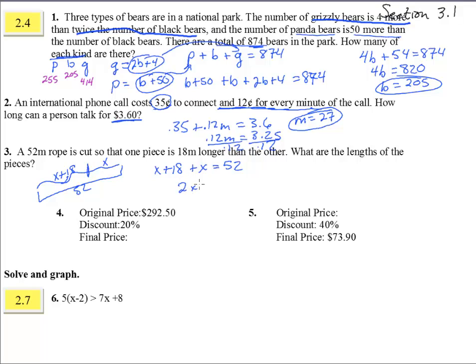Add those together, we get 2x plus 18 equals 52. 2x equals, if we subtract 18 and subtract 18, we get 34, divide by 2, and we get x equals 17. So one piece is 17 meters long, and the other is bigger by 18.